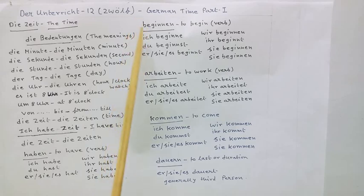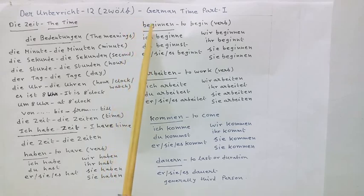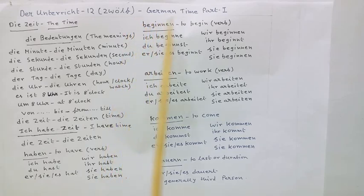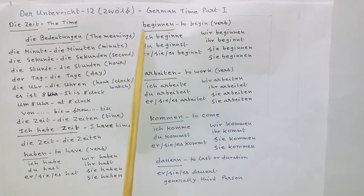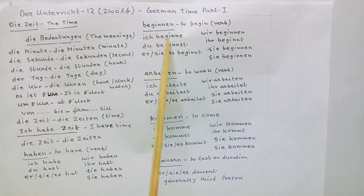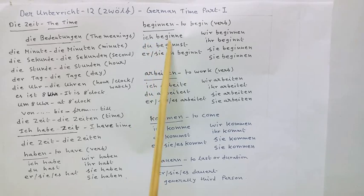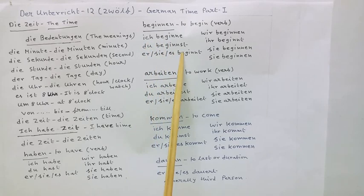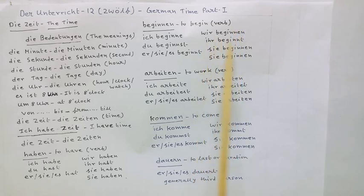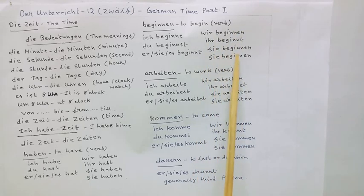Now here is the verb beginnen — to begin. Ich beginne. Du beginnst. Er, sie, es beginnt — he, she, it begins. Wir beginnen. Ihr beginnt. Sie beginnen. Sie beginnen — these are the conjugations of beginnen.